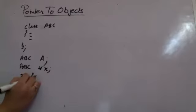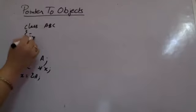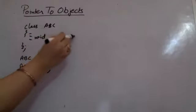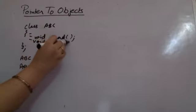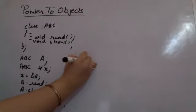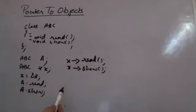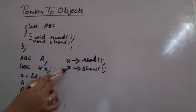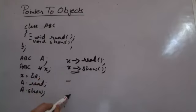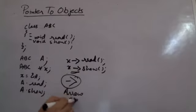We can then say x is equal to the address of a. If the class has functions like 'void read' and 'void show', just as we call a.read and a.show using a normal object, we can use 'x->read' and 'x->show' using a pointer. Whenever calling member functions through a pointer to the object, we use the arrow operator — a hyphen followed by a greater-than sign.